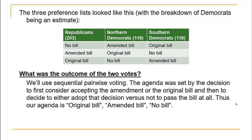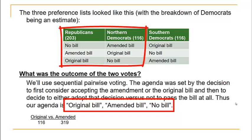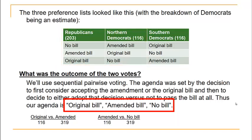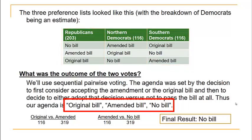Using sequential pairwise voting, the agenda was: original bill, amended bill, no bill. The first head-to-head was original bill versus amended bill — only the southern Democrats (116 members) preferred the original bill, so the amended bill won. Then came amended bill versus no bill at all — only the northern Democrats preferred the amended bill, so the final result was no bill at all.